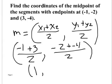Negative two plus negative four is negative six, divided by two is negative three. So the midpoint is (1, -3). If you were to graph these two points, (1, -3) would be exactly in the middle between them.